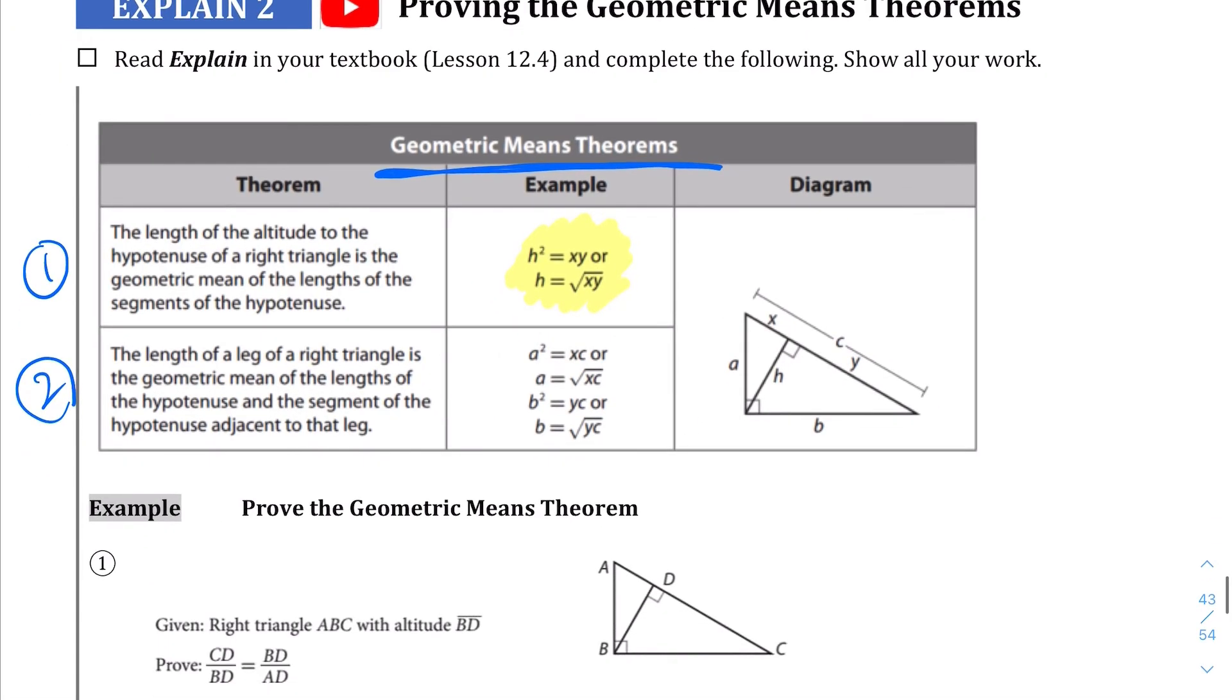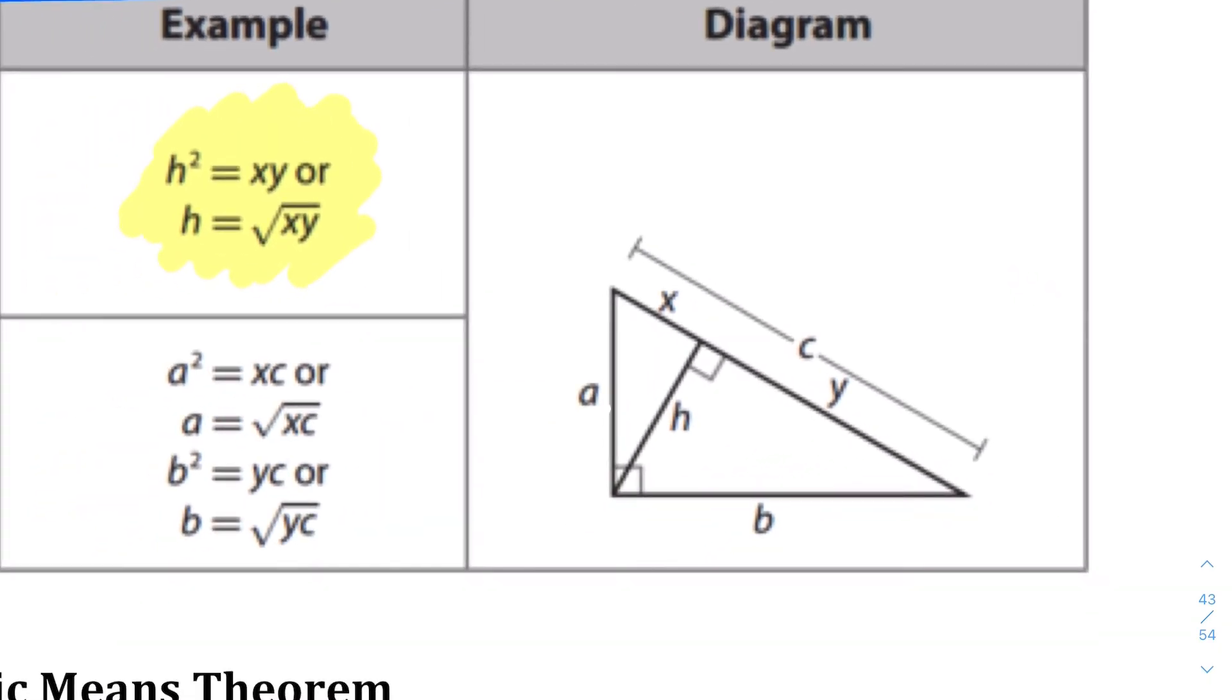And the other part of this theorem is that if you were to look at the other legs, let's take A for example. If you square it, it's going to equal this times the entire length of the hypotenuse. Or if you take the other side, if you take the other leg, this is going to equal this segment times the entire length of the hypotenuse.